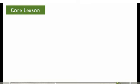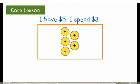Let's look at some examples. I have $5. I spend $3. I have a value of positive 5. When I spend $3, I remove 3 positive chips. 5 minus 3 equals 2. I have $2 left.